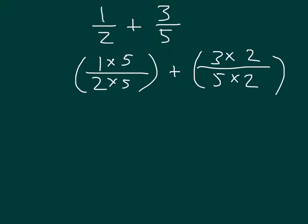Let's go ahead and get the equivalent fraction for 1 half by solving this work here. 1 times 5 is 5, and 2 times 5 is 10. The equivalent fraction for 3 fifths, 3 times 2 is 6, and 5 times 2 is 10. So we have 5 tenths plus 6 tenths, which is equal to 11 tenths.